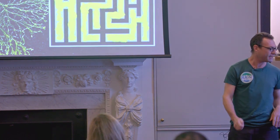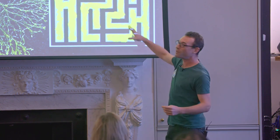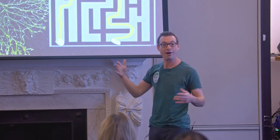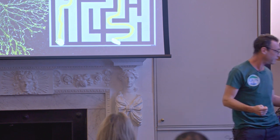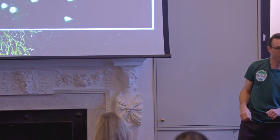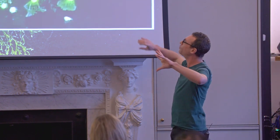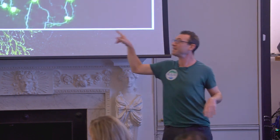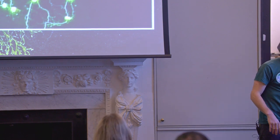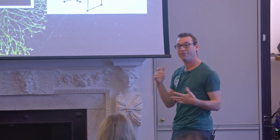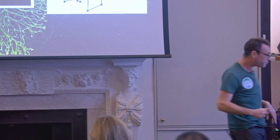Slime moulds are really clever in many ways. If you put them in a maze with oats — their favourite food — on it, they will find the most efficient path through the maze. They can solve mazes better than four-year-old children. If you put a whole bunch of oats out, they will explore the area and then find the most efficient ways of linking up those places. They did that in 23 hours, and that is the Tokyo Railway Network — they outdid the Japanese in efficiency of that network in 23 hours, which is pretty impressive.